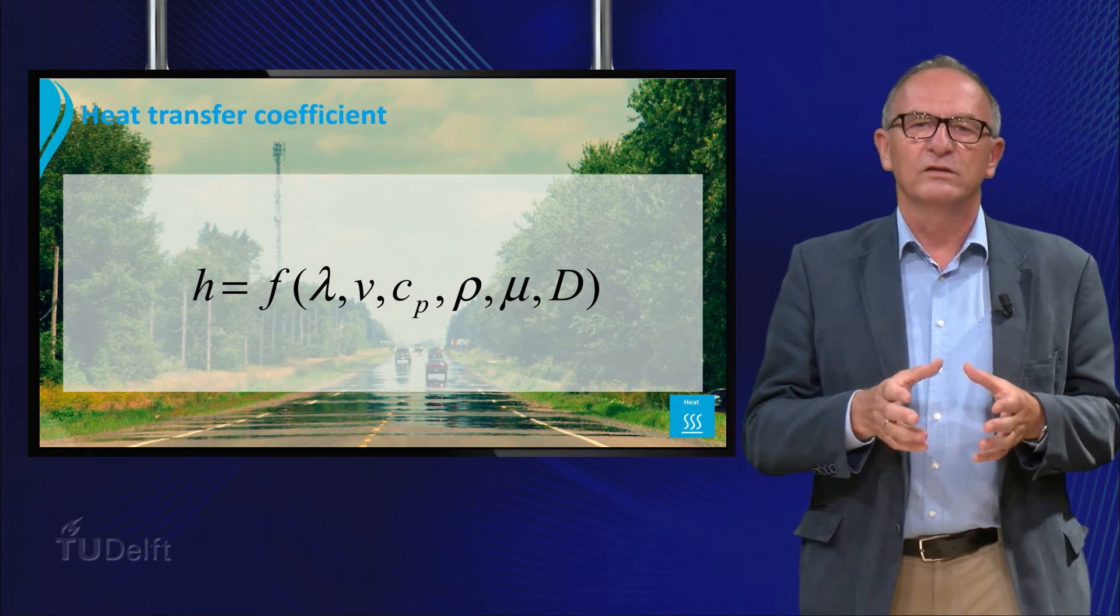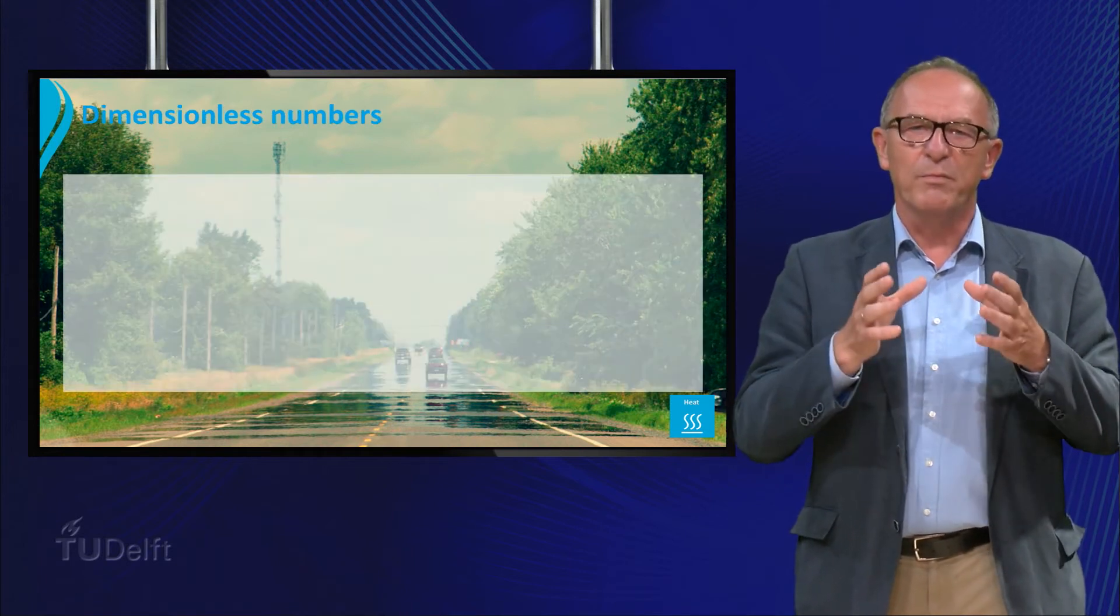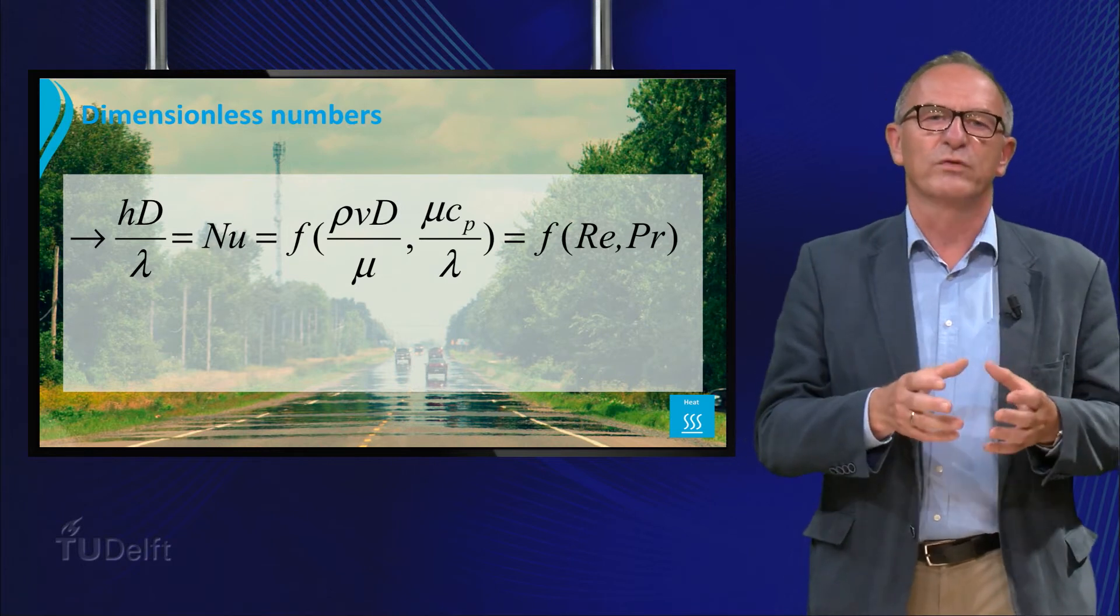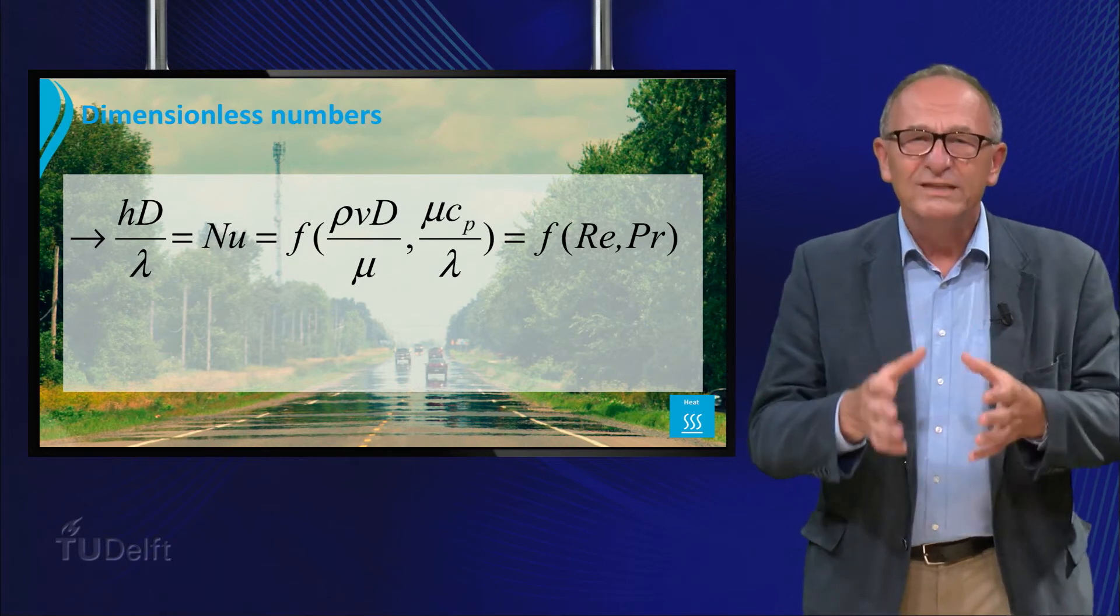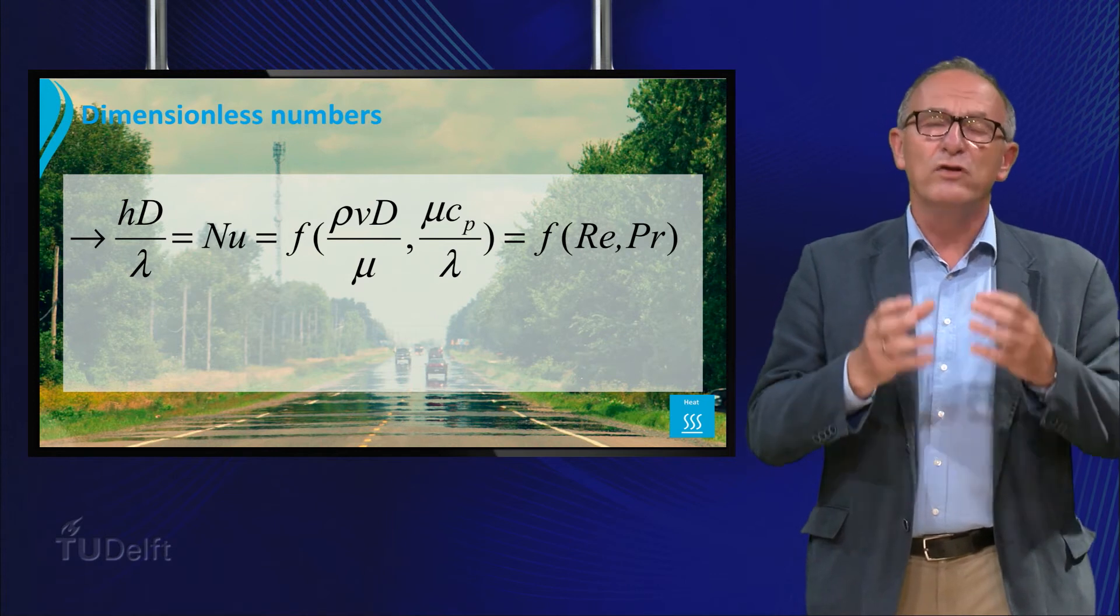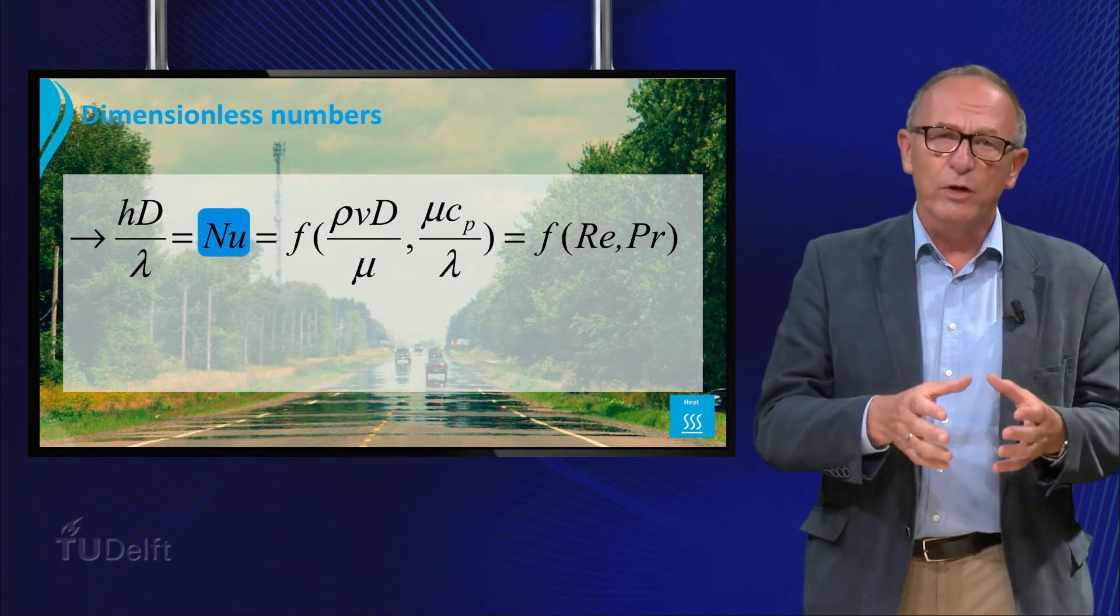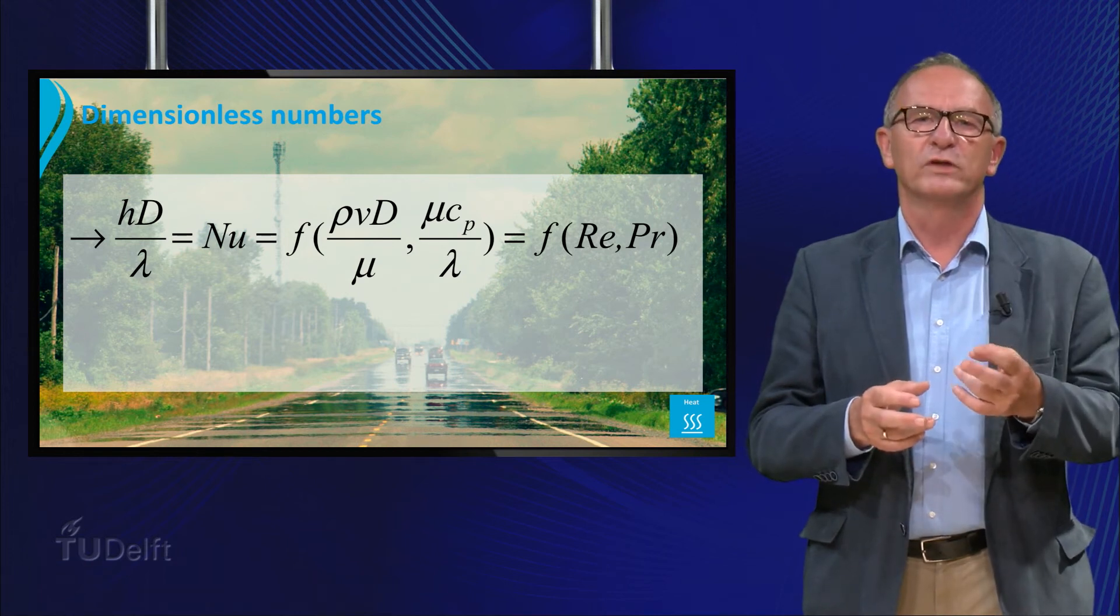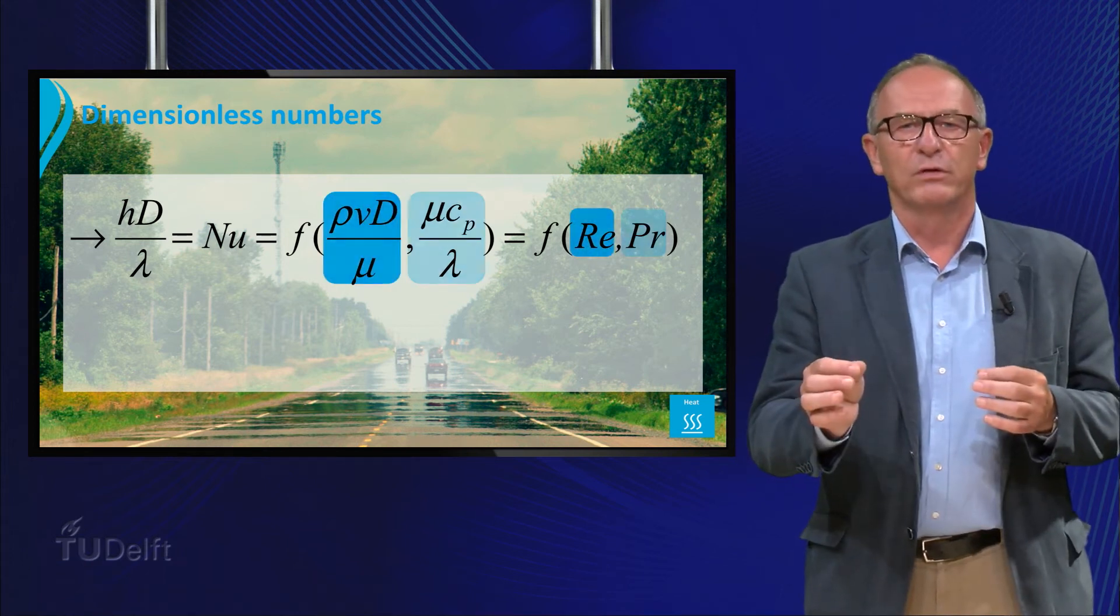From dimension analysis we get information about the dimensionless quantities which play a role in this heat transfer process. From this analysis we obtain that the Nusselt number for turbulent pipe flow depends on two other dimensionless numbers, that means the Reynolds number and the Prandtl number.